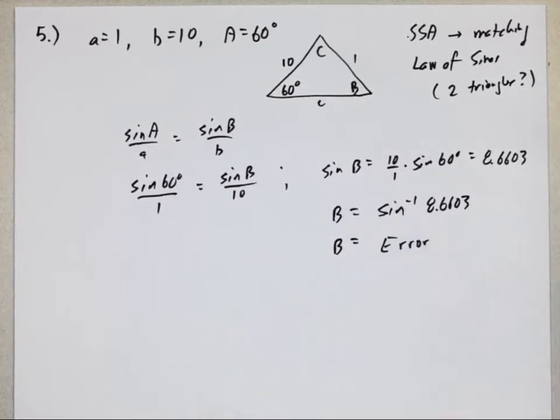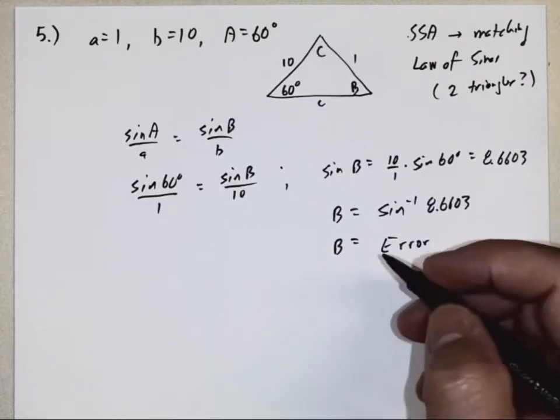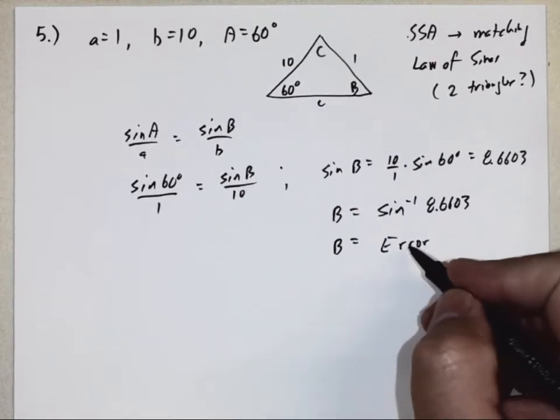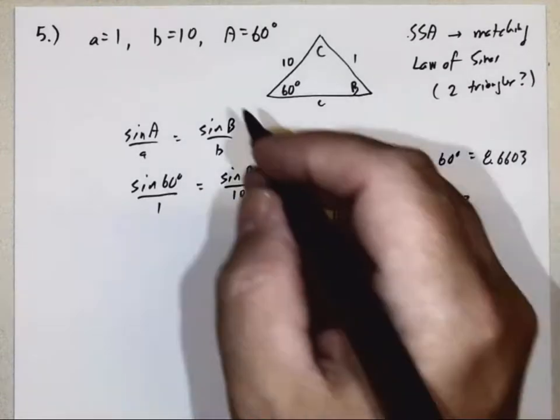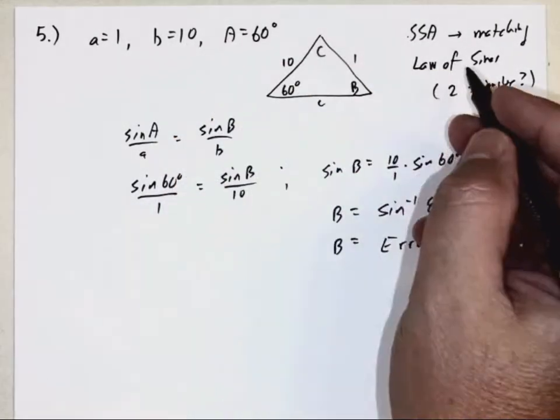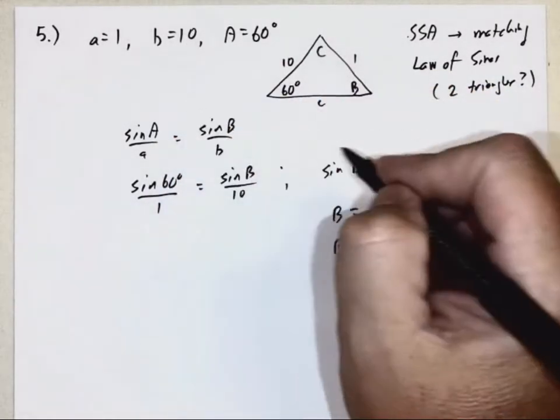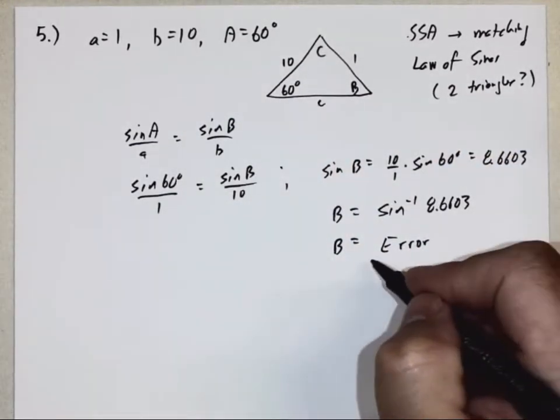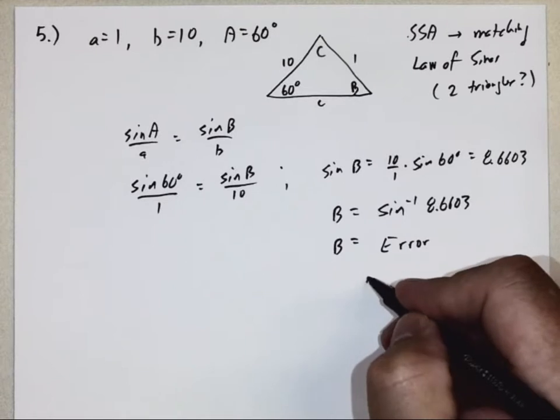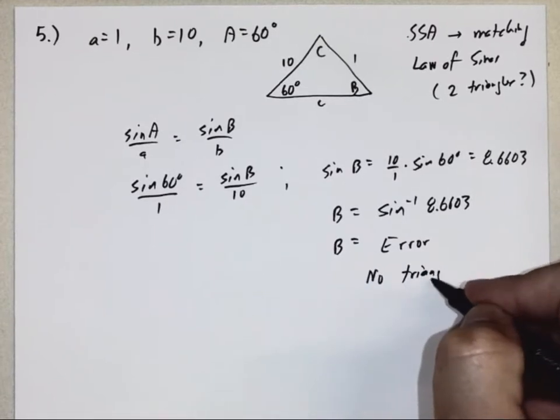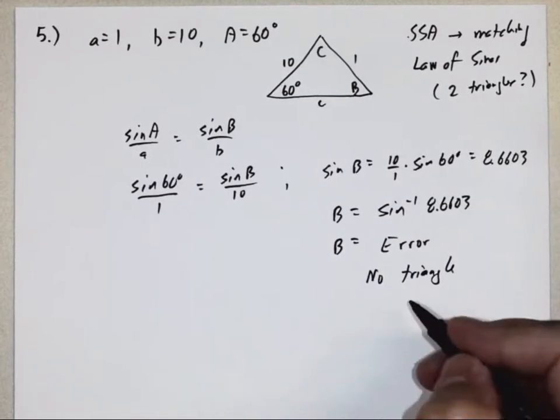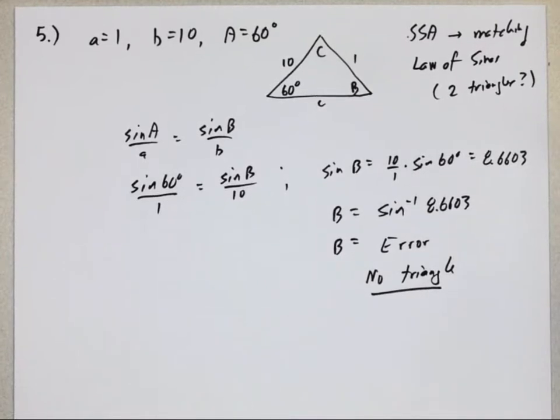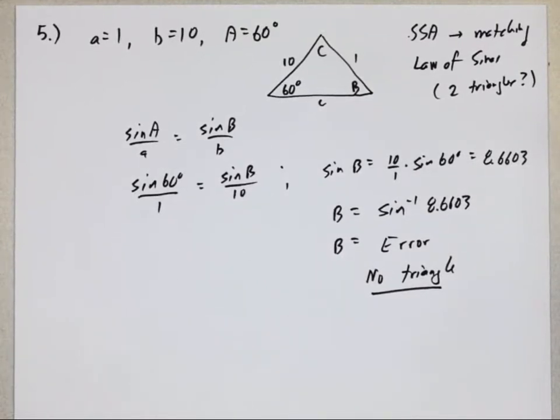In other words, this is not an actual angle. What does that mean? First of all, if you actually do this on the test, go back and make sure you didn't make a math error. But if you go back and you did all the math correct and you actually get no angle, that means the answer is no triangle.